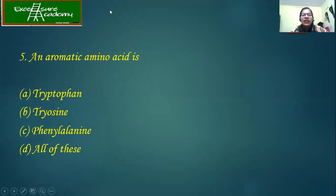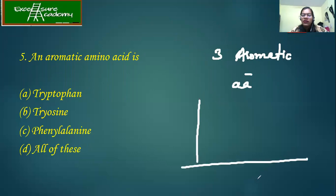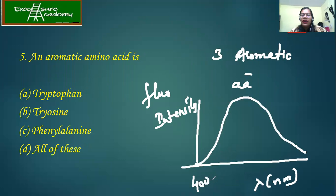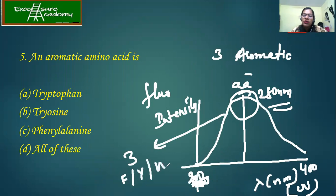And the aromatic amino acids. There are three aromatic amino acids responsible for absorption at around 280 nanometers in the UV range (200–400 nm). So what are those three aromatic amino acids? Phenylalanine, tyrosine, and tryptophan. Looking at the options — tryptophan, tyrosine, and phenylalanine are all present — so the answer is all of these.